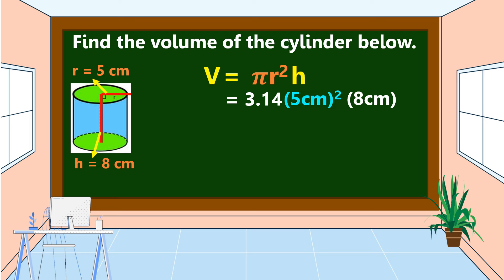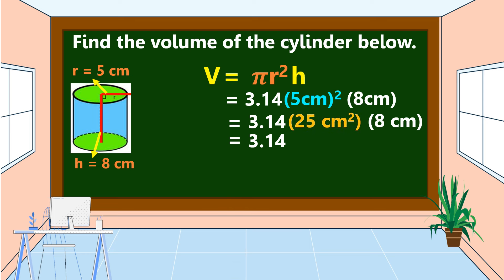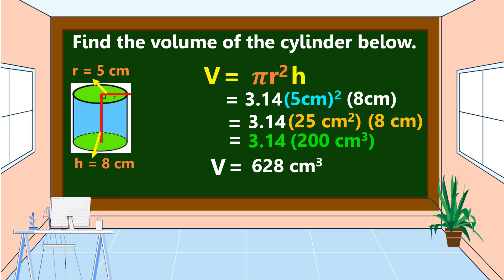Let's multiply. We multiply first the number inside the parentheses with an exponent. So 5 cm × 5 cm = 25 cm². Then bring down 3.14 and 8 centimeters. 3.14 × 25 cm² × 8 cm = 200 cm³. Finally, 3.14 × 200 cm³ gives us the volume of this cylinder with a radius of 5 centimeters and a height of 8 centimeters.